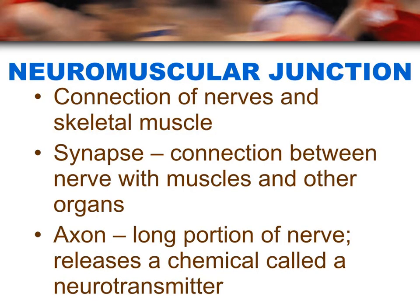A neuromuscular junction is a connection between a motor neuron and a skeletal muscle. A synapse is a connection between either a nerve to a nerve or a nerve to another organ — but in this specific case, it's a connection between a motor neuron and a skeletal muscle. An axon is the long portion of the neuron that transmits information from the cell body down to the axonal terminal.